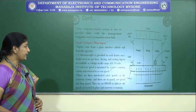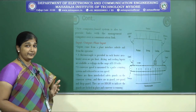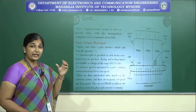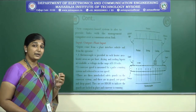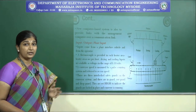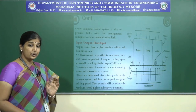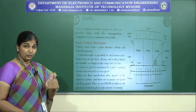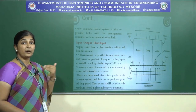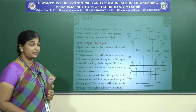Conveyor speed is measured by a pulse counting system and referred to as 'con speed.' The movement of the conveyor belt is based on pulse count — a higher number of pulses means higher belt speed, and a lower number means lower speed. Based on the number of pulses, you can measure and control the speed of operation of the conveyor belt.